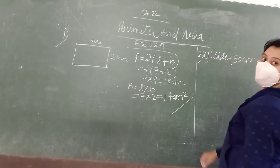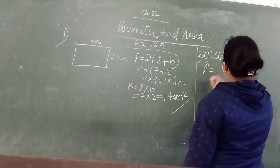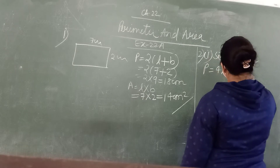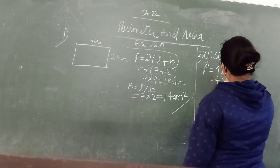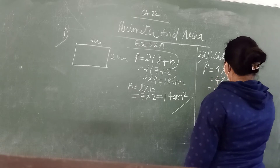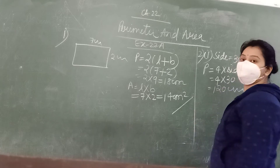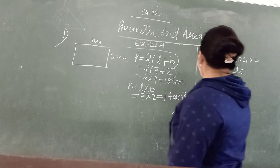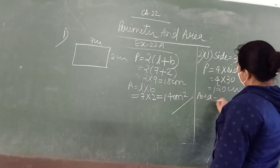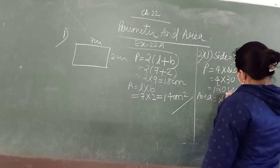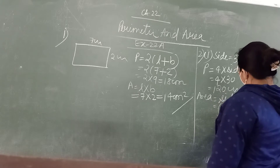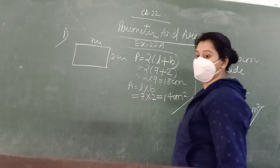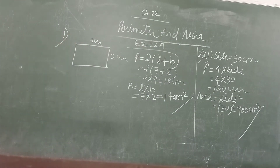We have to get its area and perimeter. Perimeter is equal to 4 into side. In place of side, it is equal to 30. This is 120 centimetres — this is the perimeter of the square. A square means all 4 sides are equal. Area is side squared. In place of side, you write 30. 30 squared is 900 centimetres square. This is the area of the square.